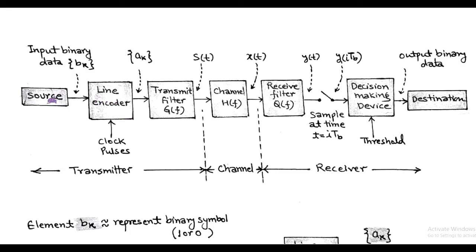It consists of blocks such as information source, followed by a line encoder having a clock pulse, then a transmit filter having transfer function G(f), and then the channel H(f).